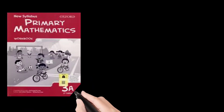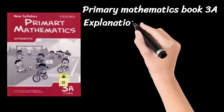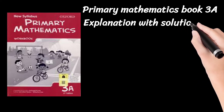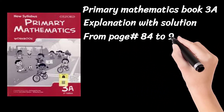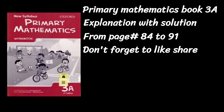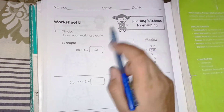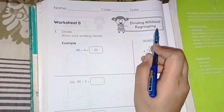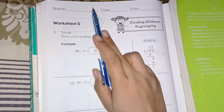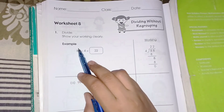Hi everyone, today we are going to solve Primary Mathematics Book 3A with complete solutions from page number 84 to 91. Page number 84, Worksheet number 8: Dividing without regrouping. First you have to write your name, class, and date.